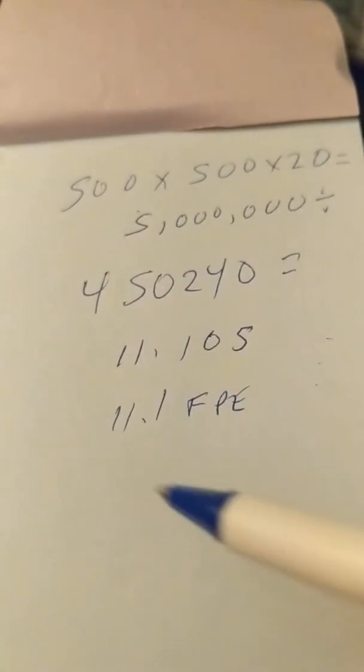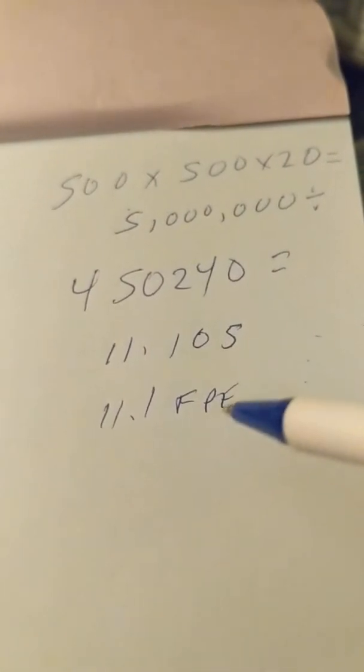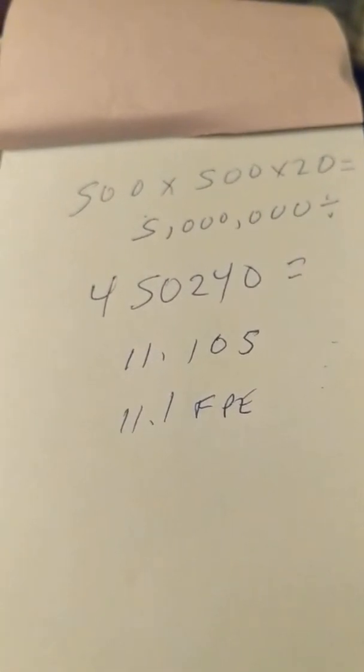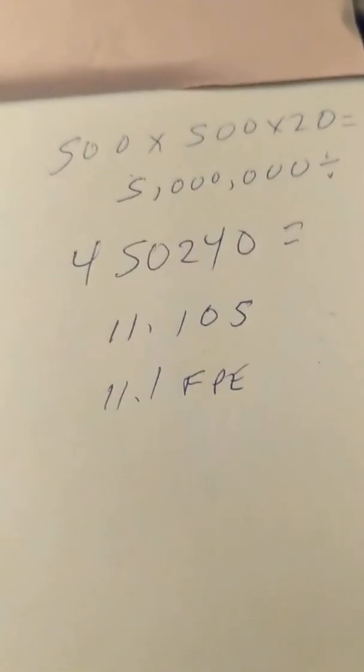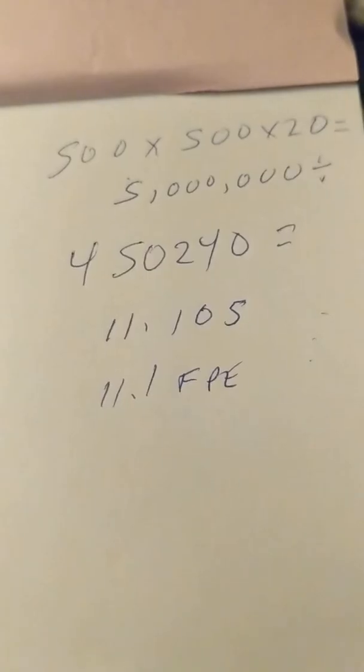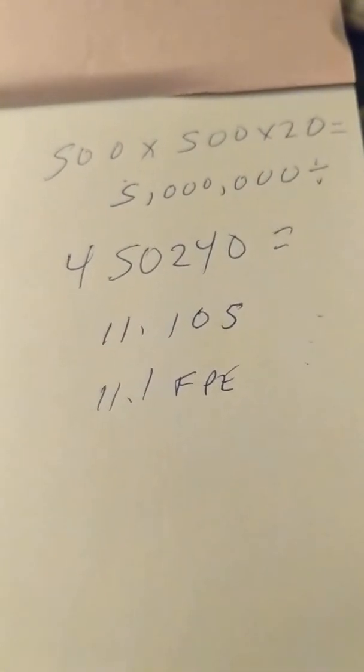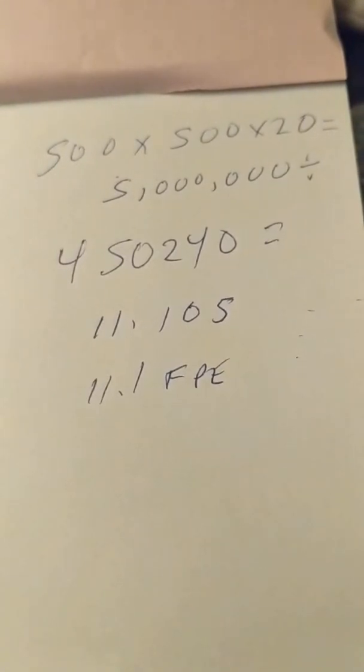You round that off to 11.1 foot-pounds of energy. That's what that formula would be for a pellet traveling 500 feet per second, and the pellet weighs 20 grains.